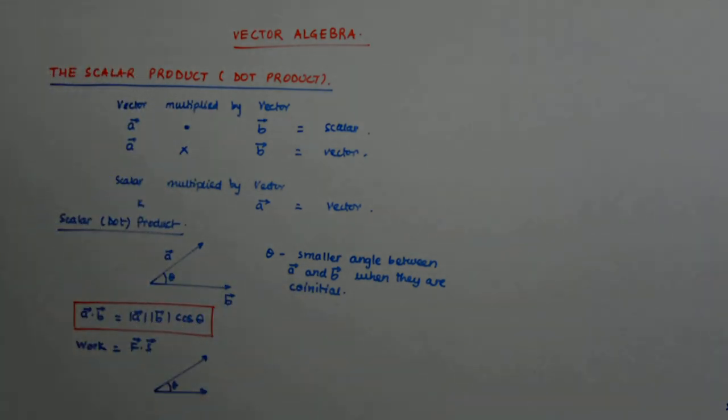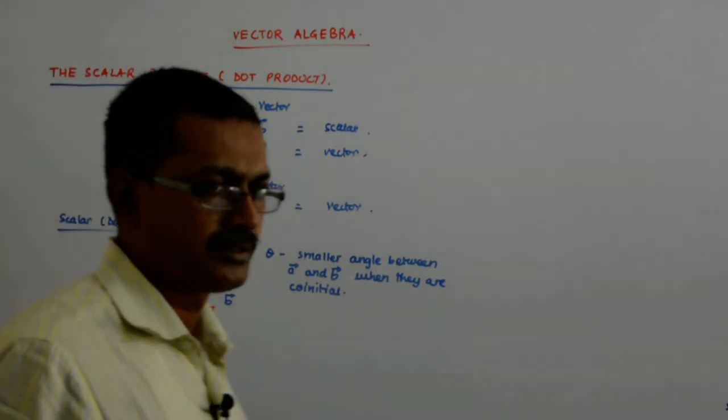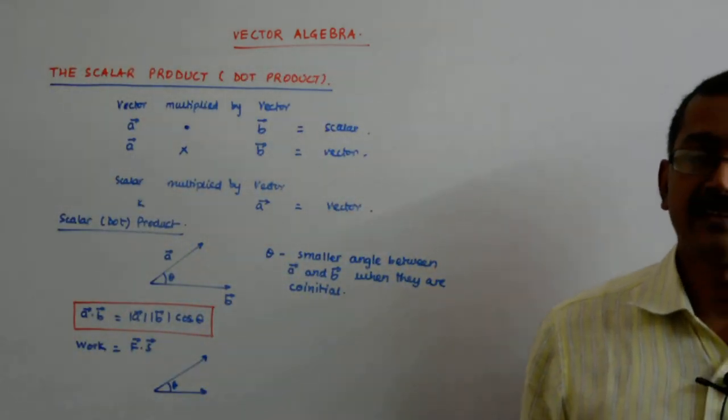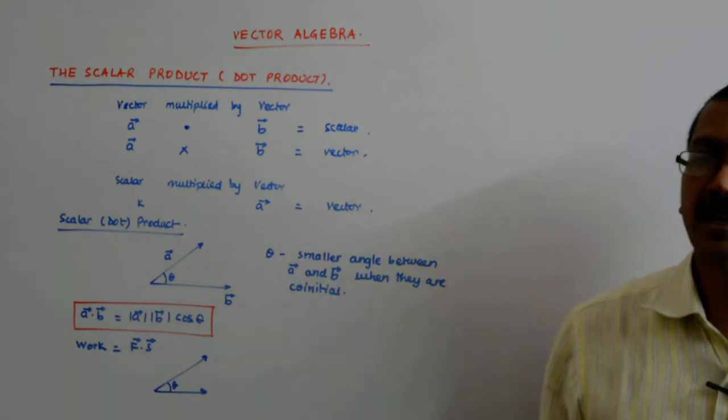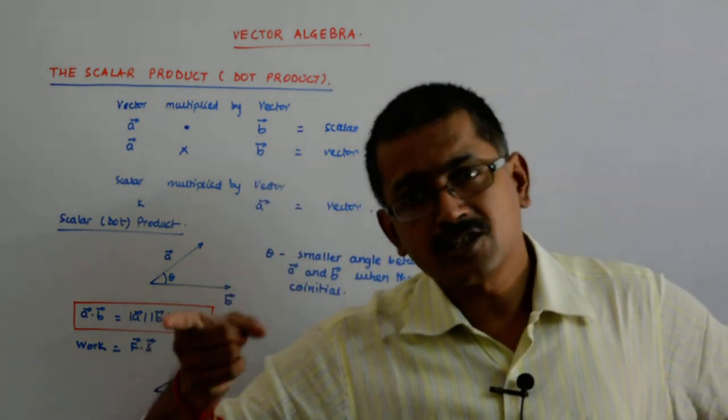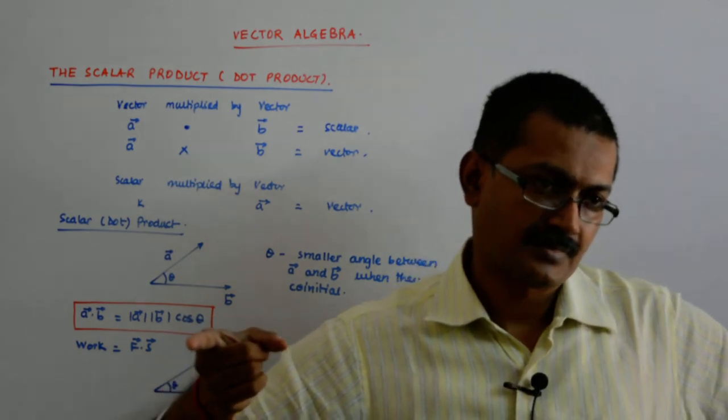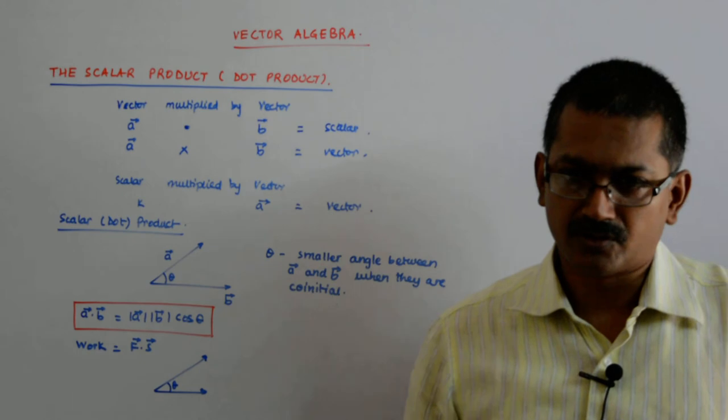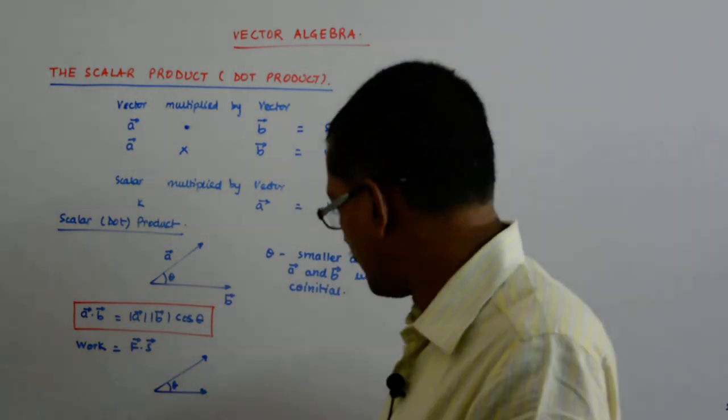So, if it is at 90, then it becomes 0. Because what it says, it is the force multiplied by displacement in the direction of the force. Displacement in direction of the force. This is physics, this is where it is applicable.